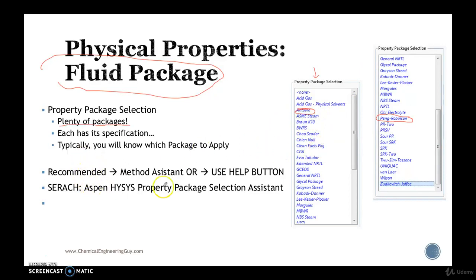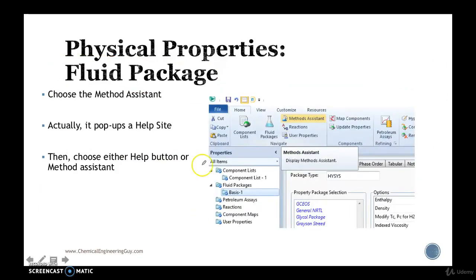So typically we will choose either by recommendation or by the method assistant. So we can search by method assistant, which is right here. We are already in the physical properties environment. And once we click home, you will get these buttons right here. So click on the method assistant.